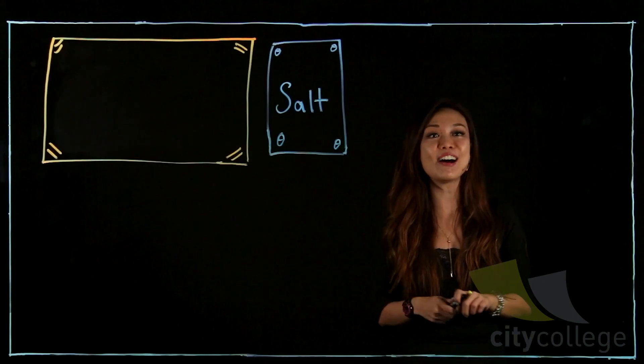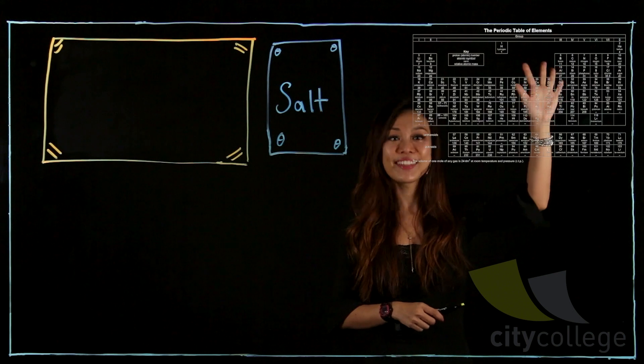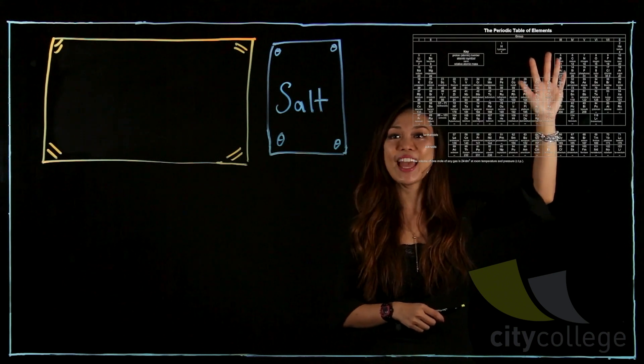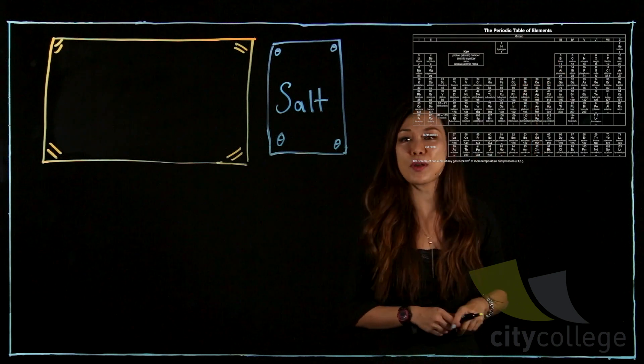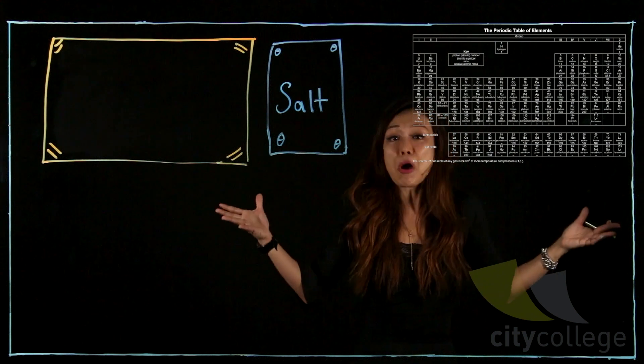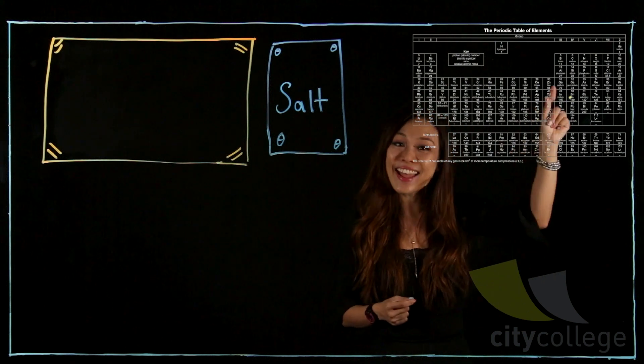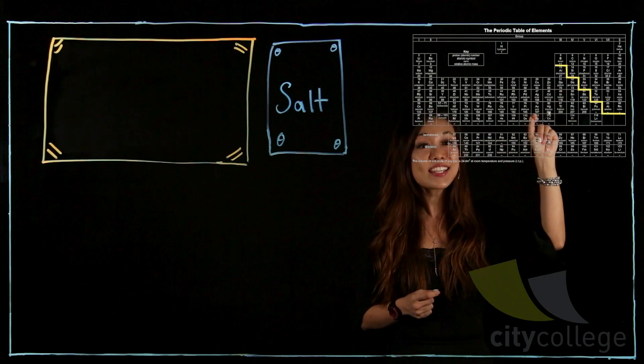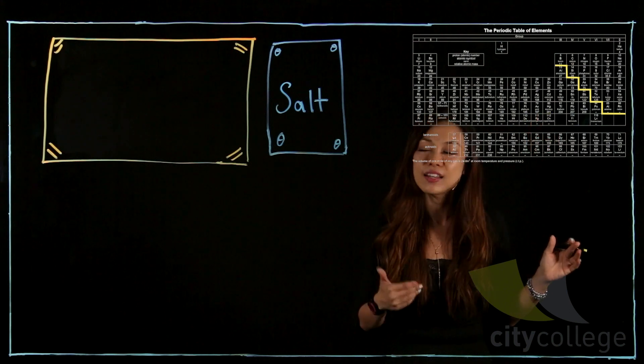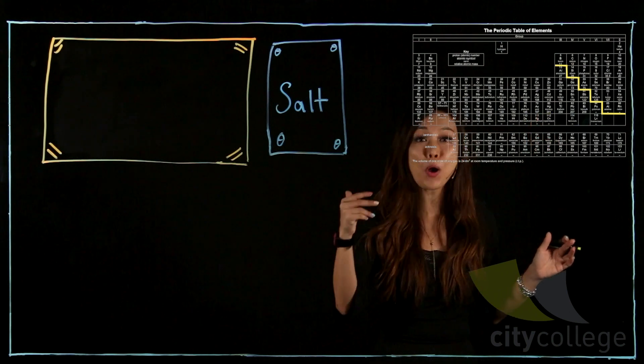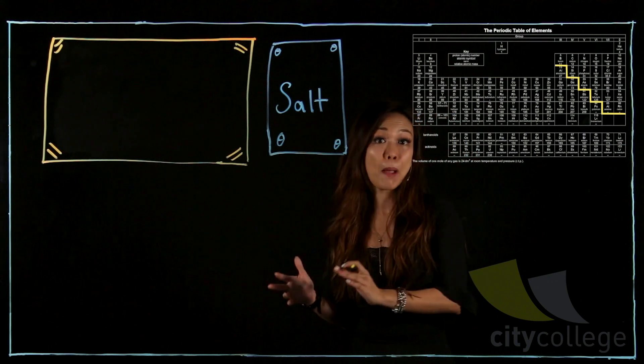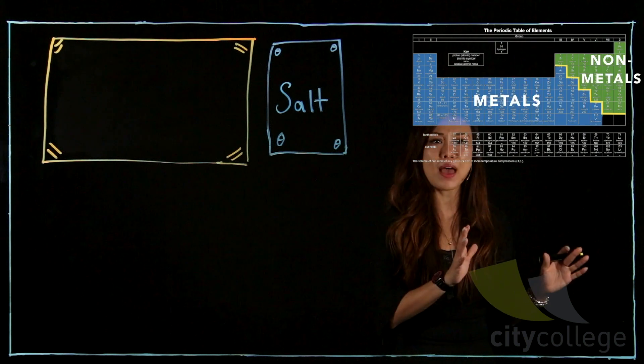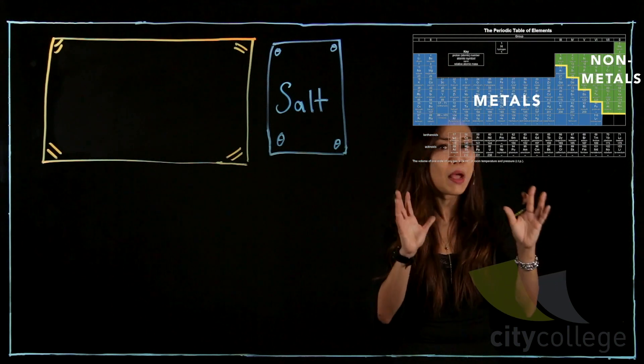Bingo! So right now, everybody take out your periodic table and tell me, what is the first thing you do when you get your periodic table? It is always to draw the staircase. Now, after you draw the staircase, of course, ask yourself this question. What is the purpose of the staircase? It is to separate the metals from the non-metals. So why is it that I bring this up?